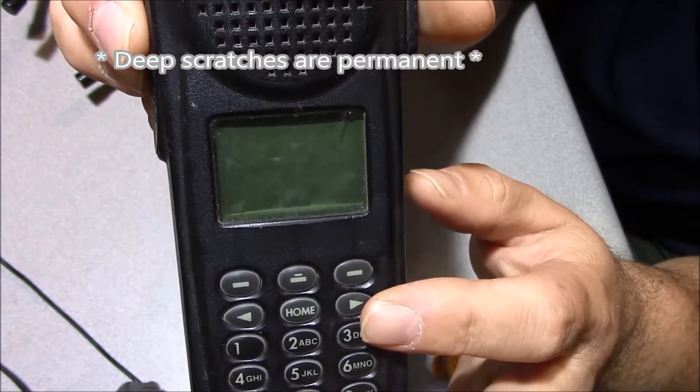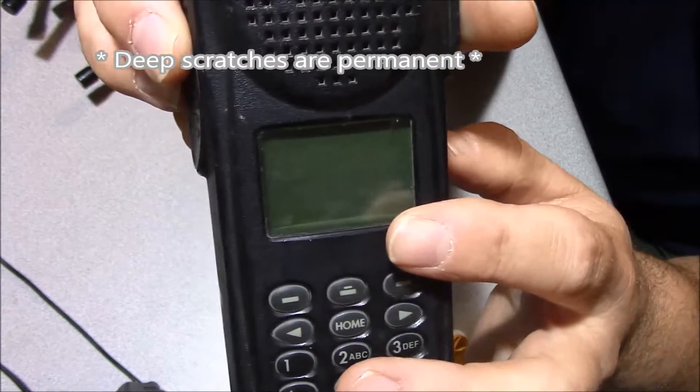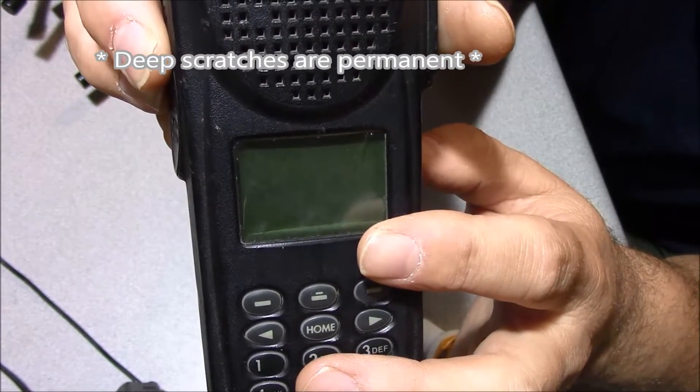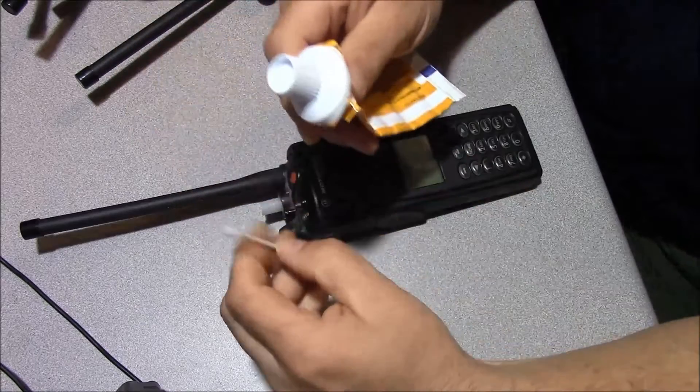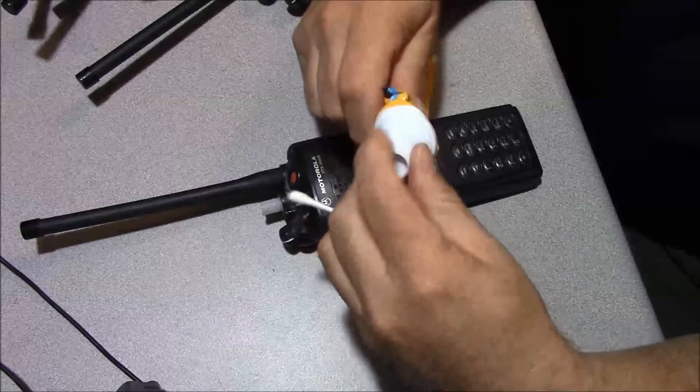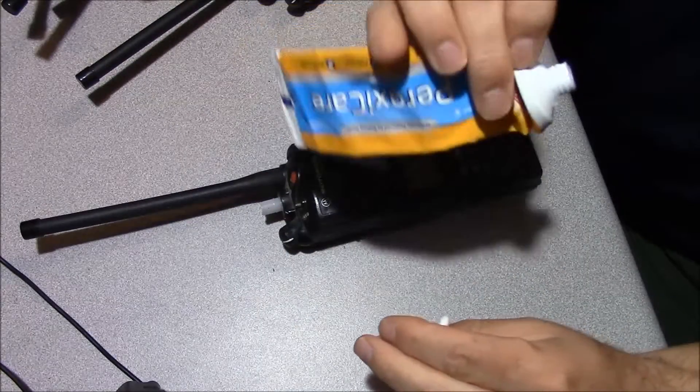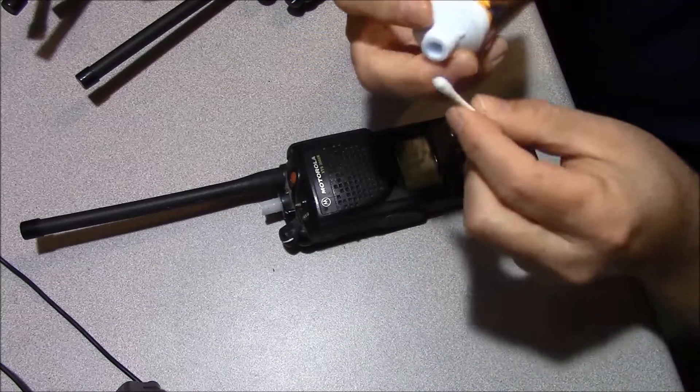What we're going to do is a real quick cleanup on this scratched display that you can do with stuff you've got laying around your house. Just get yourself some toothpaste, that's all there is to it. This is just Arm & Hammer ProxyCare, which is what I'll use.